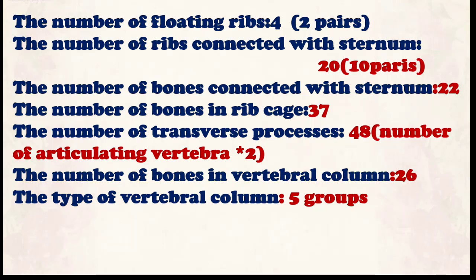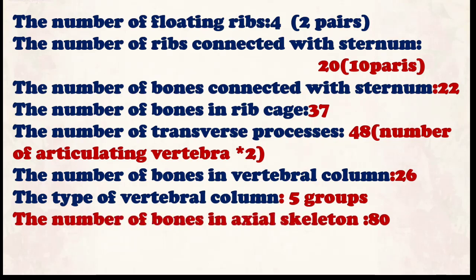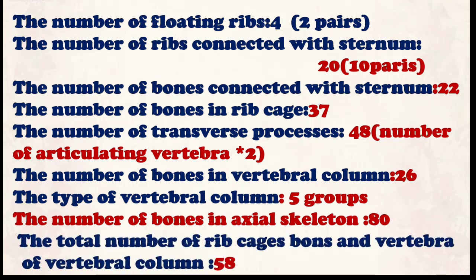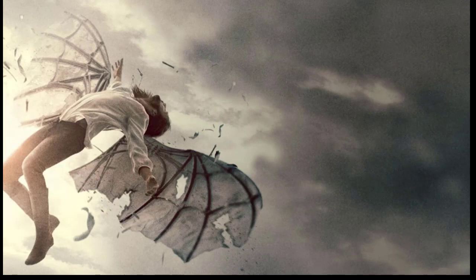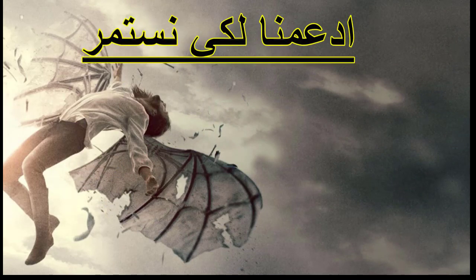The types of vertebral column groups are five: cervical, thoracic, lumbar, sacral, and coccygeal vertebrae. The number of bones in the axial skeleton is 80. The total number of rib cage bones and vertebral column vertebrae together is 58. With this, we have finished the teaching of the axial skeleton.